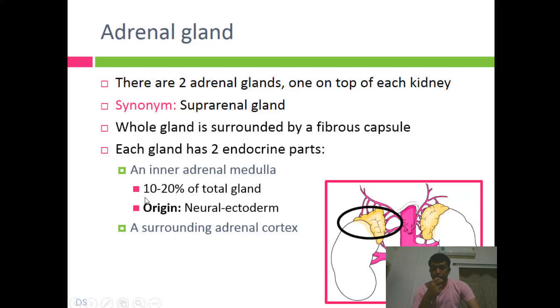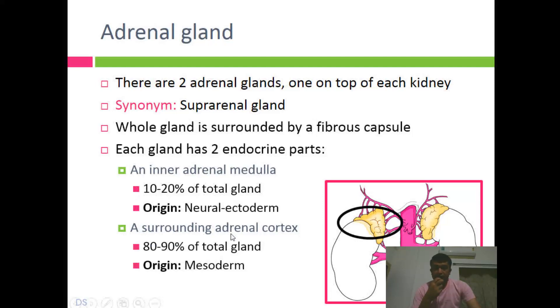The medulla is only 10 to 20 percent of the total gland, and the cortex is 80 to 90 percent.